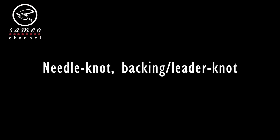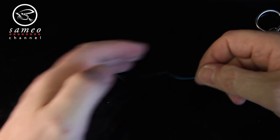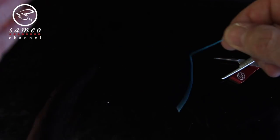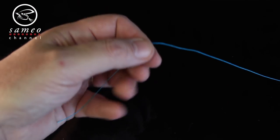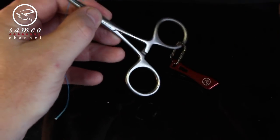Now let's try the backing knot or the leader knot. Lock your forceps through the forceps 10-15 cm, it's about 3 or 5 inches up on the backing of the leader. Put the line you're attaching back on the forceps to the handle.